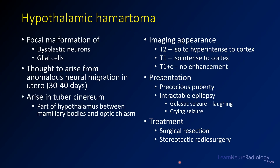This is a case of hypothalamic hamartoma. This is a focal malformation of dysplastic neurons and glial cells in the hypothalamus. It's thought to arise from unusual neural migration in utero, in the first trimester. It occurs at the tuber cinereum, which is where the hypothalamus is, between the mammillary bodies and optic chiasm.